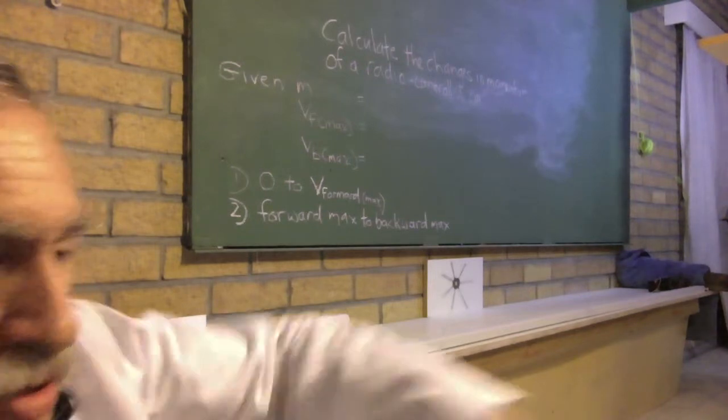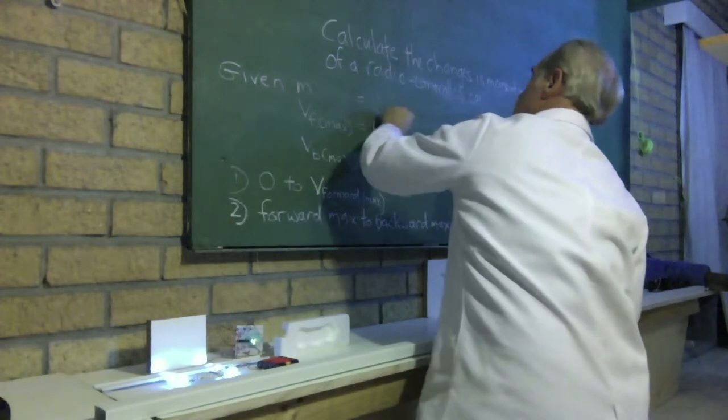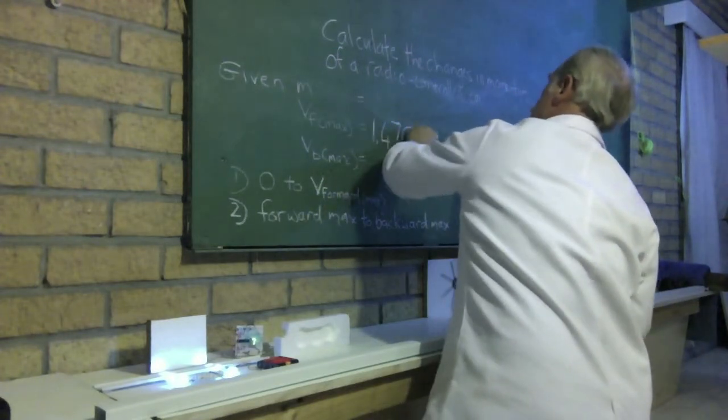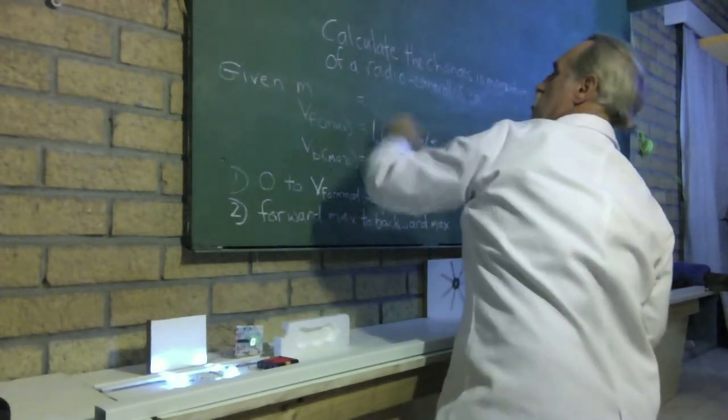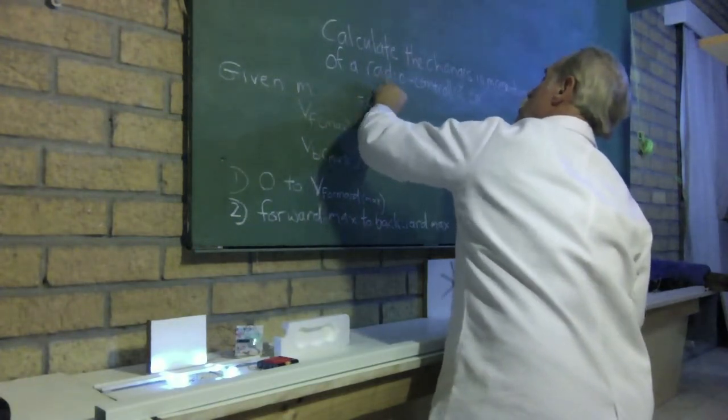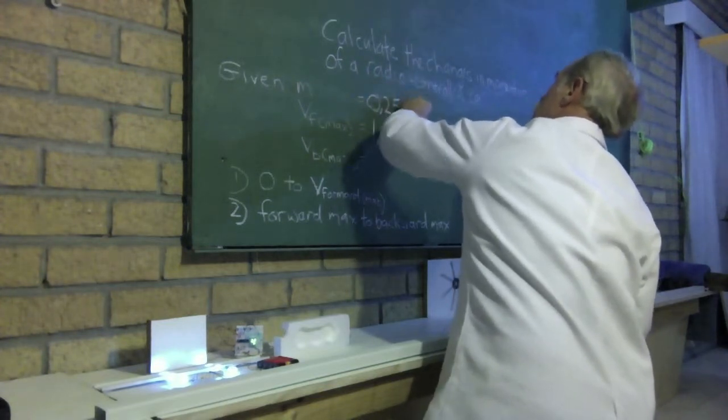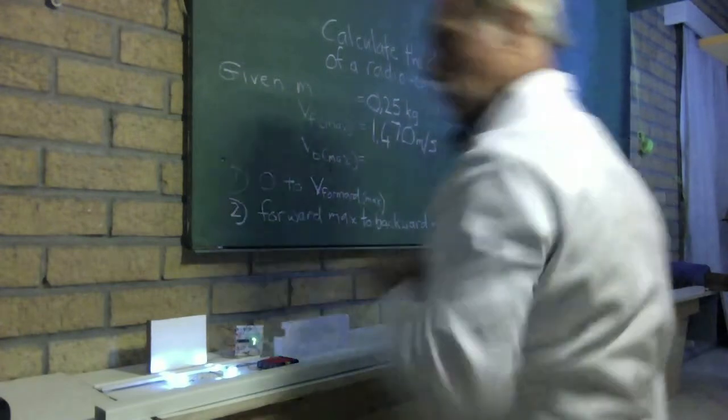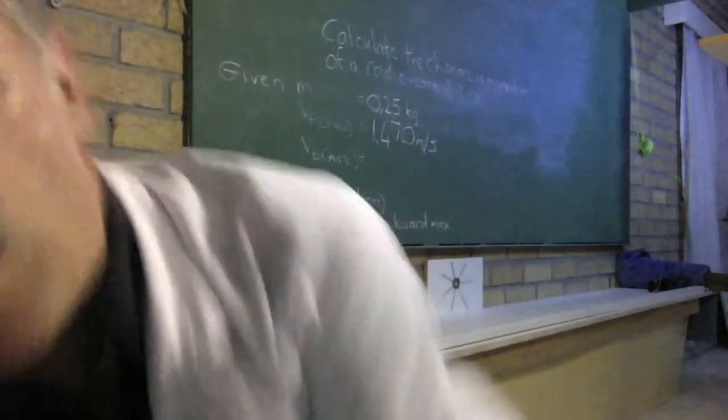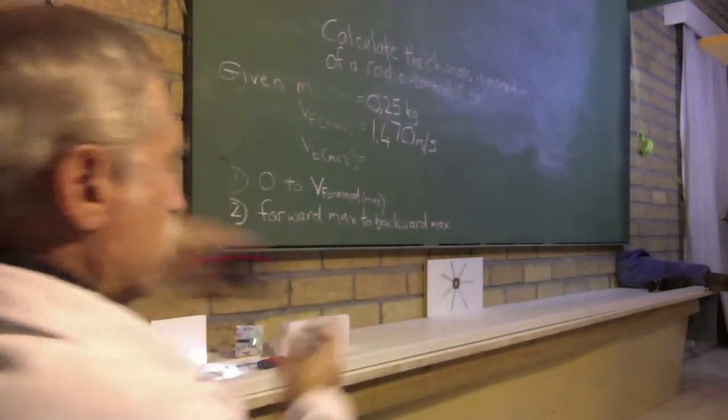I'm going to write that on the board. 1.470 meters per second. The mass of the car was 0.25 kilograms. Let's bring our car back by pressing reverse.